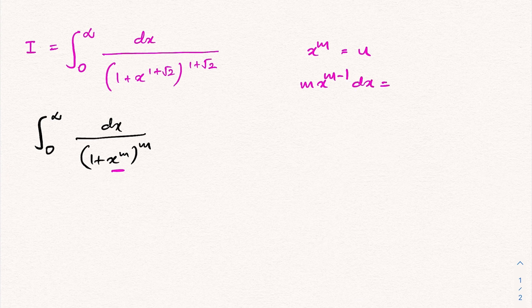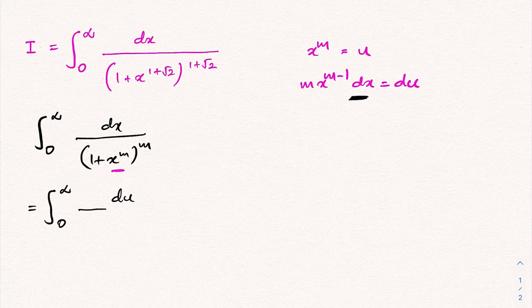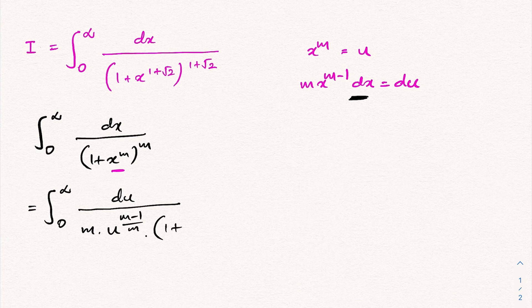We plug in the limits: zero to infinity remains zero to infinity. Isolating dx gives dx = du / (m · x^(m−1)). Since x^m = u, we have x = u^(1/m), so x^(m−1) = u^((m−1)/m). Also, (1 + x^m) becomes (1 + u).